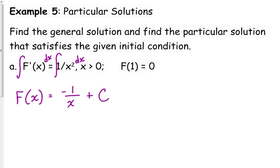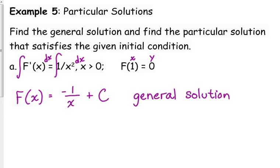If you need to take a few more steps — rewrite it, add the exponent, divide by the new exponent — that's fine. That's the general solution right there. But we want the particular solution. We are told that f of 1 is equal to 0, with 1 being our x value. So when our function equals 0 and x is 1, we're solving for c.